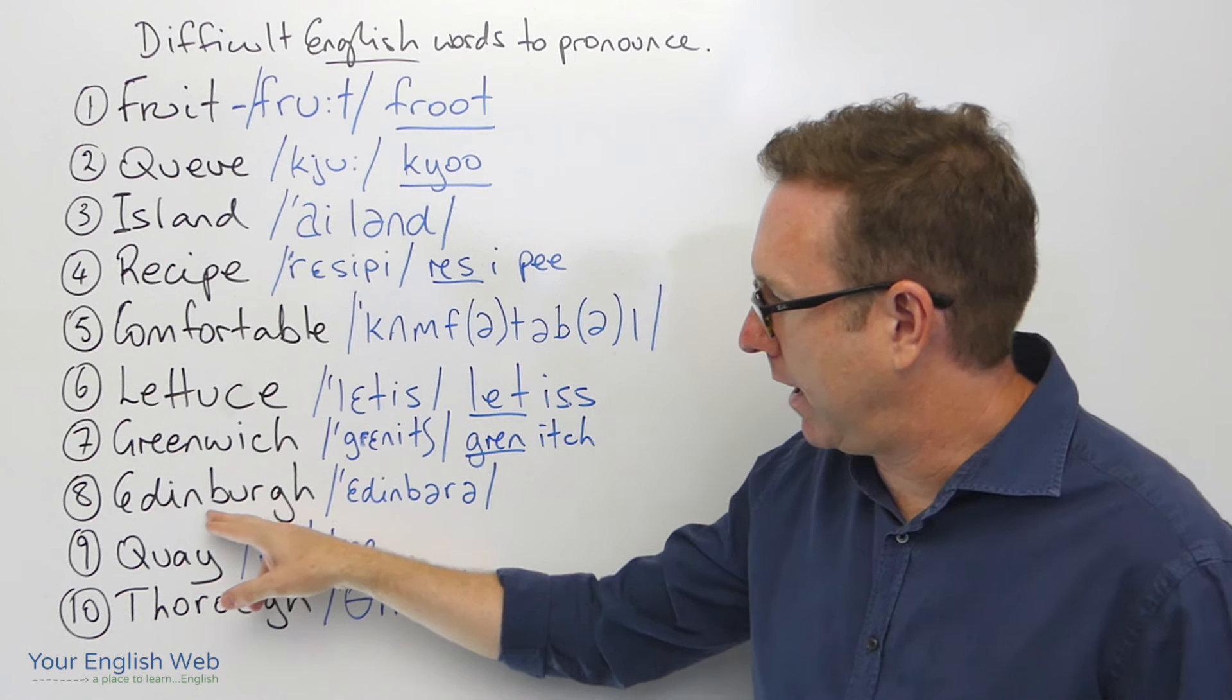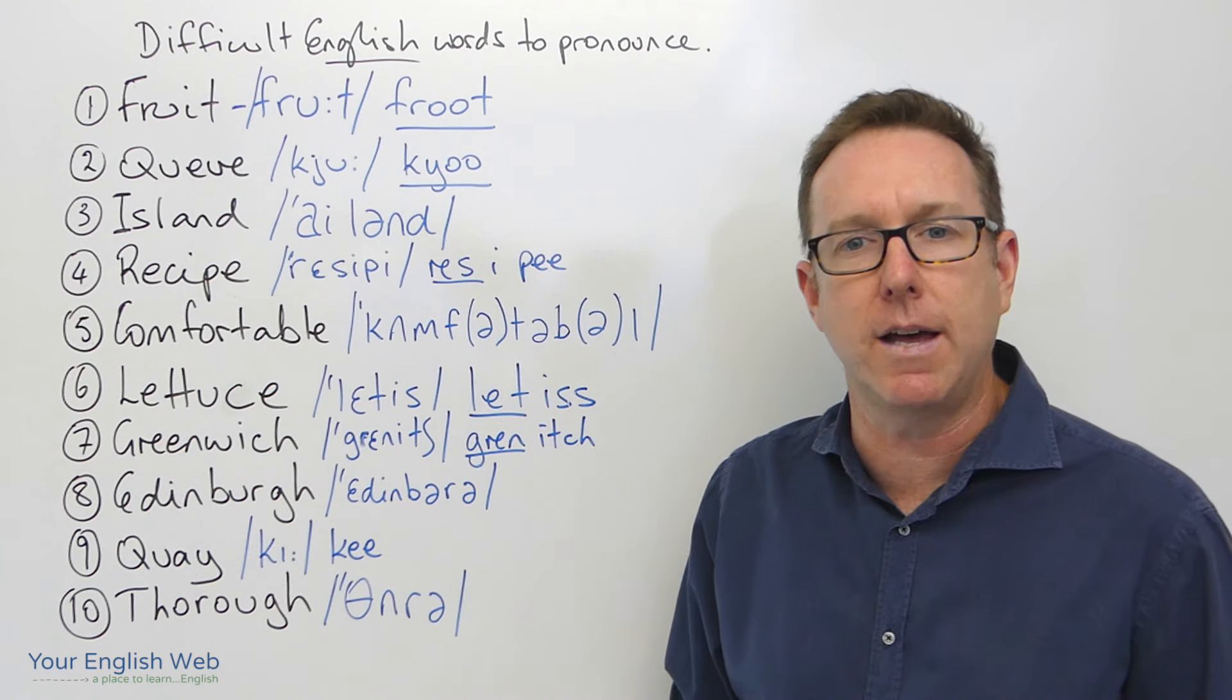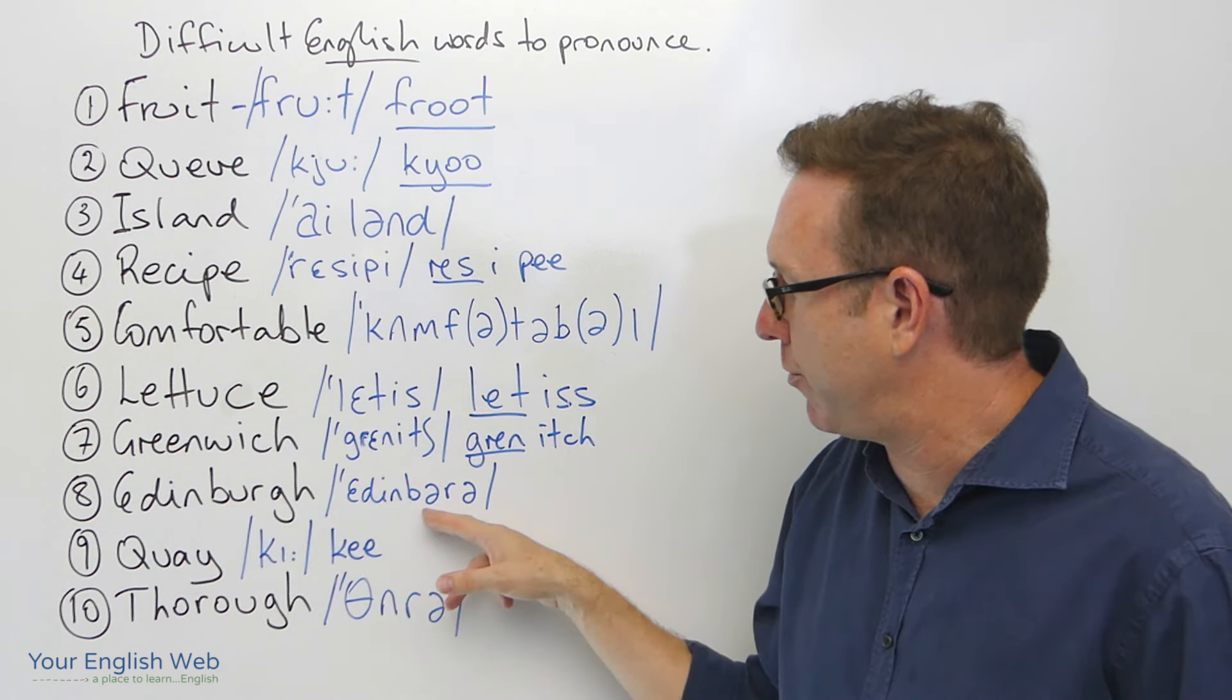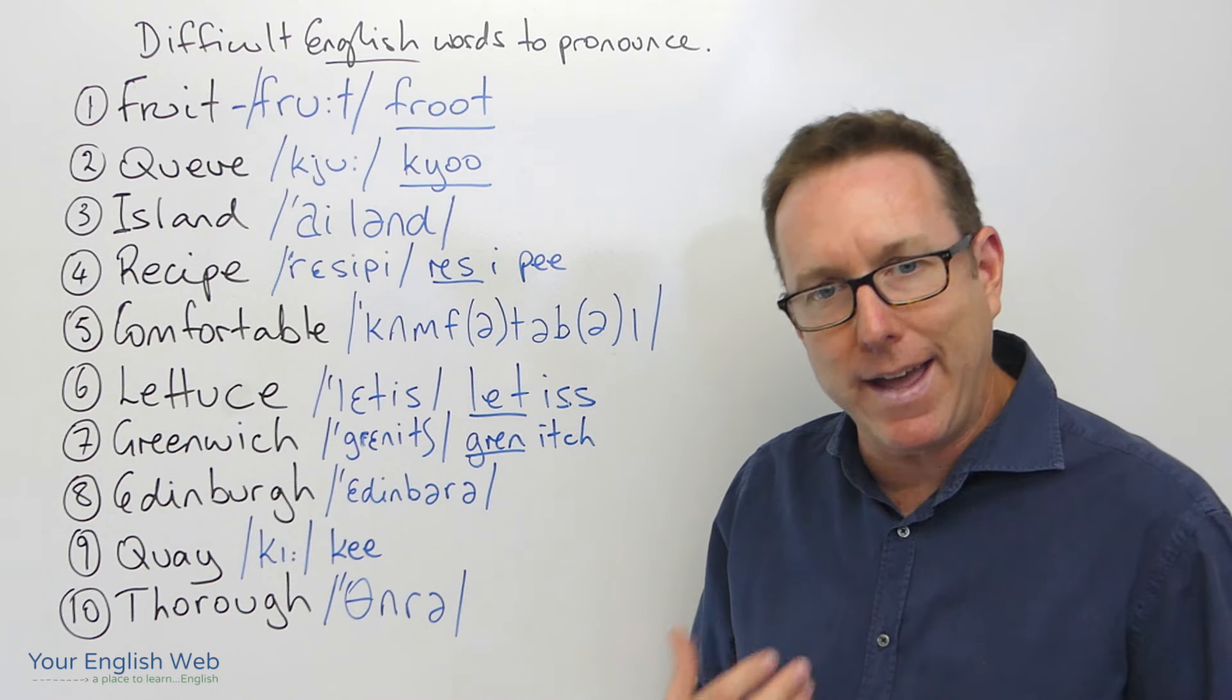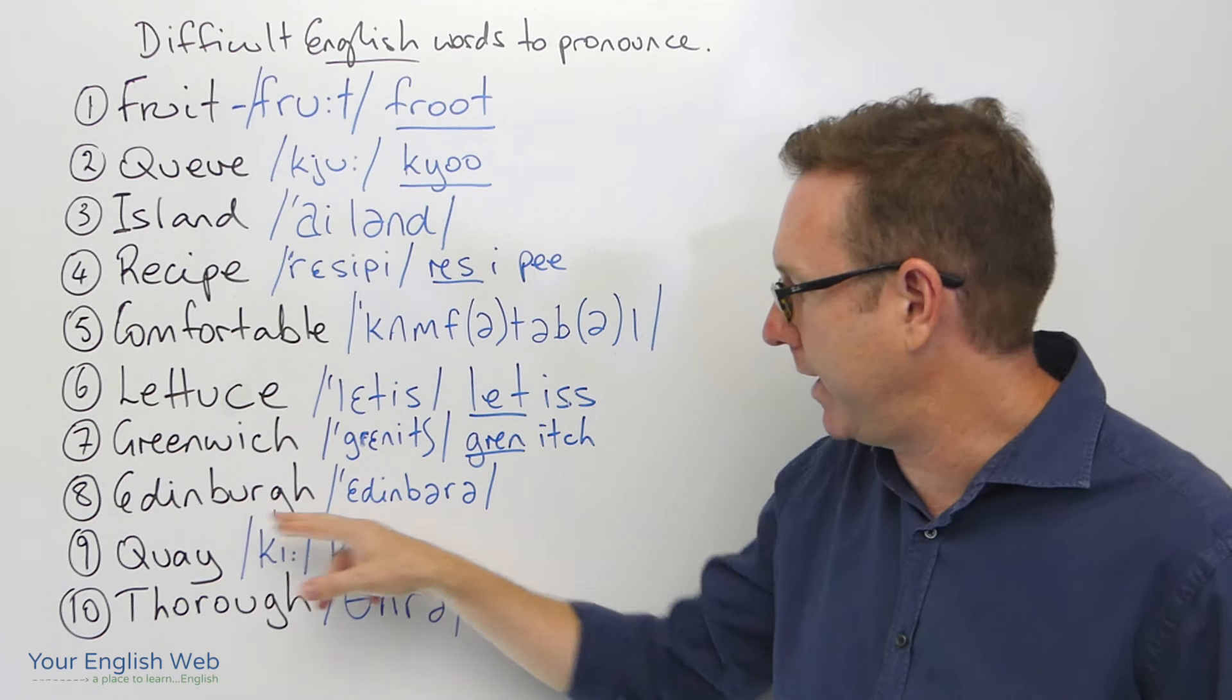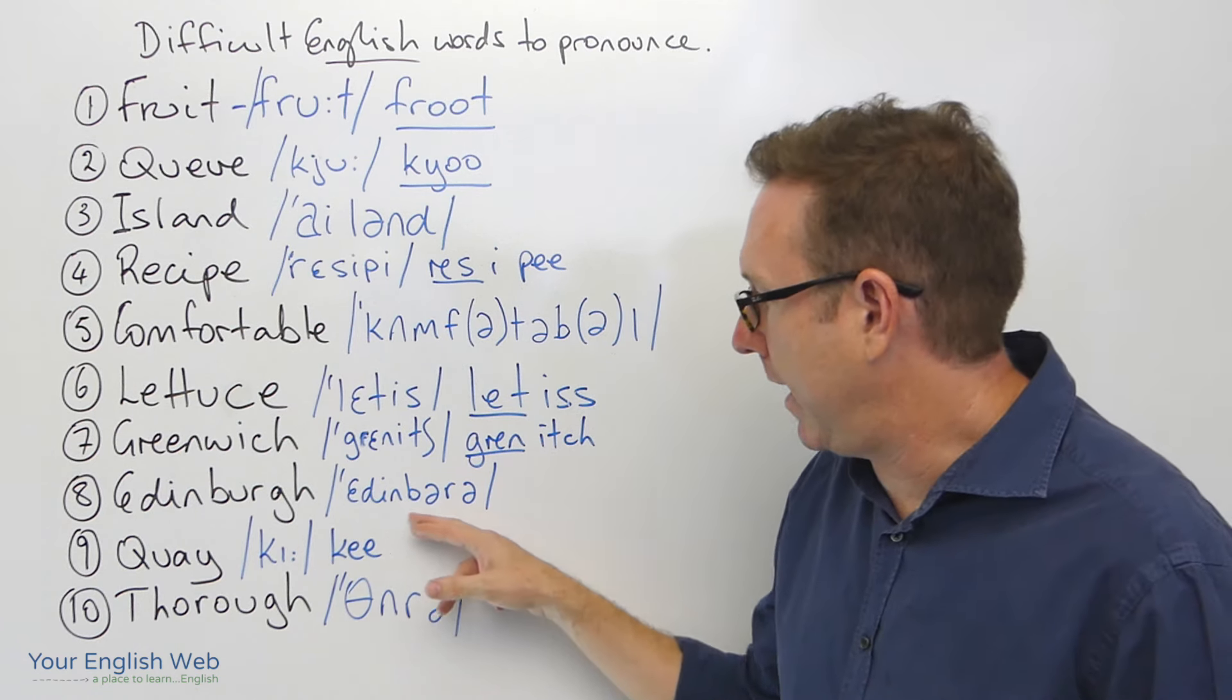The next one here, commonly mistaken again because we see these letters here. These letters take different pronunciations in English. When we have this particular word here, the pronunciation is Edinburgh, Edinburgh, Edinburgh. It's not Edinburgh. It's not Edinburgh. It's Edinburgh. You go to Edinburgh on holidays in Scotland, of course, Edinburgh.